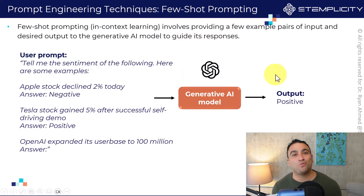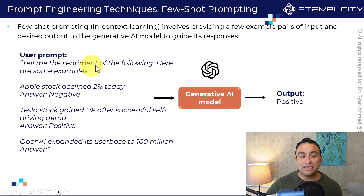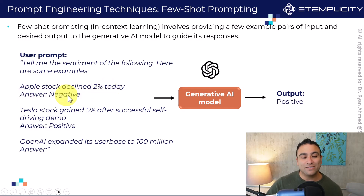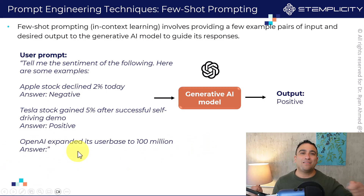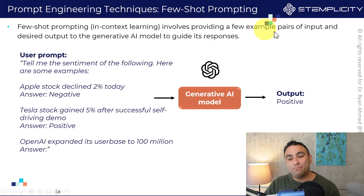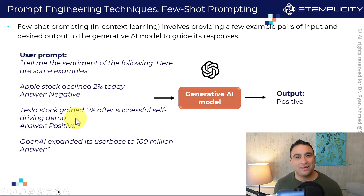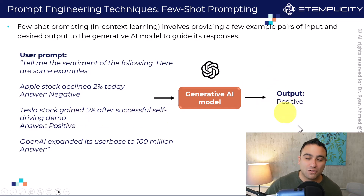With few-shot prompting, I provide a few examples. I say: 'Tell me the sentiment of the following. Here are some examples: Apple stock declined 2% today — answer: negative. Tesla stock gained 5% after successful self-driving demo — answer: positive. OpenAI expanded its user base to 100 million — answer:' and I leave it blank, expecting the AI to generate the output. We call it few-shot prompting because it involves providing a few example pairs of input and desired output to guide the model's response, generating a more accurate result.